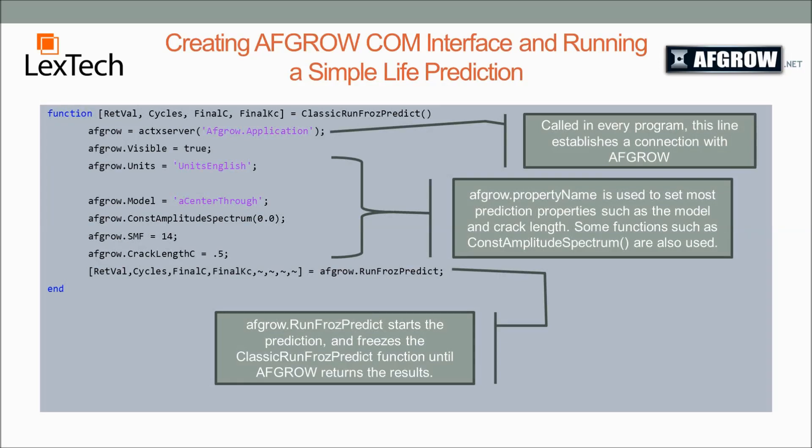The first example is a simple example using runFrozenPredict. On this first line, we have to declare the server that has a connection to AFGRO, and we'll use that handle throughout our program to access the predictions and the properties of AFGRO. Here we just set a few of our properties. First we set AFGRO.visible equal to true. We do this so that we can see what's happening in AFGRO while we're trying to debug our program.